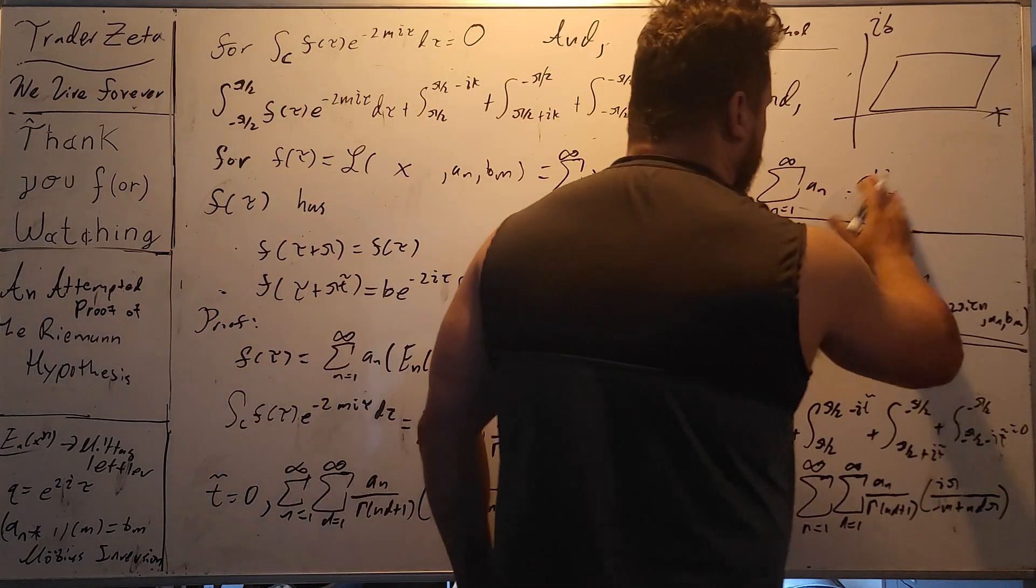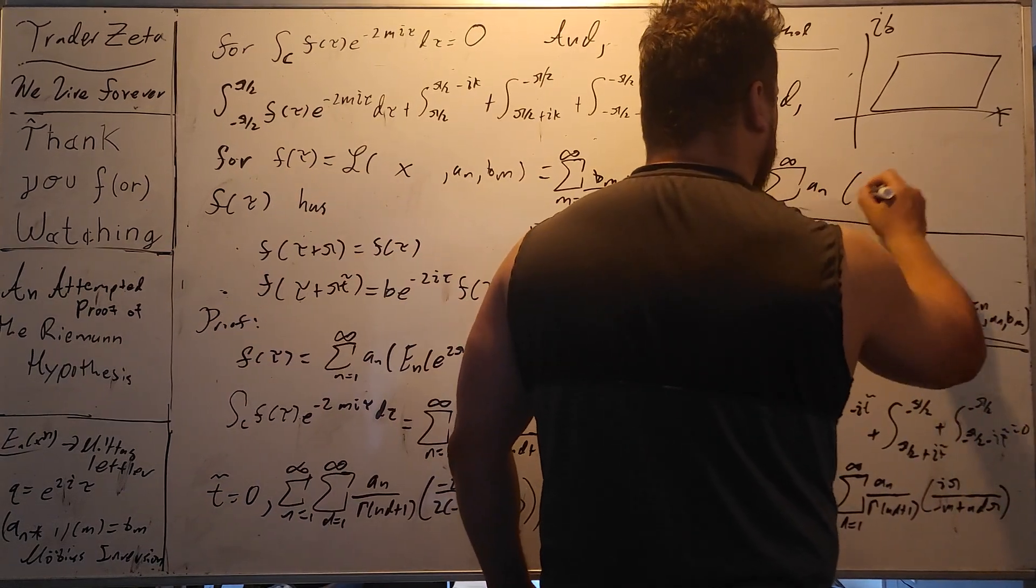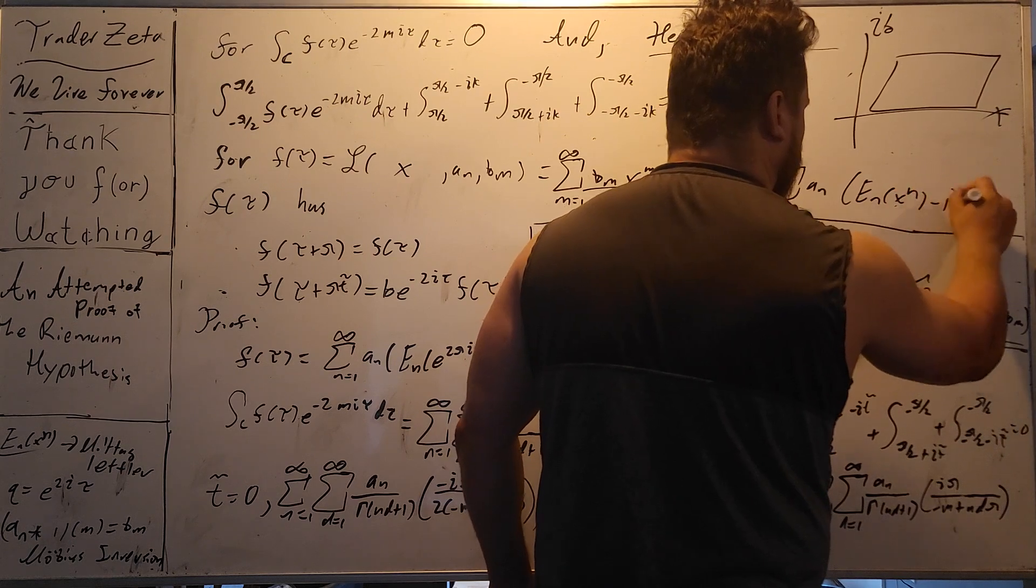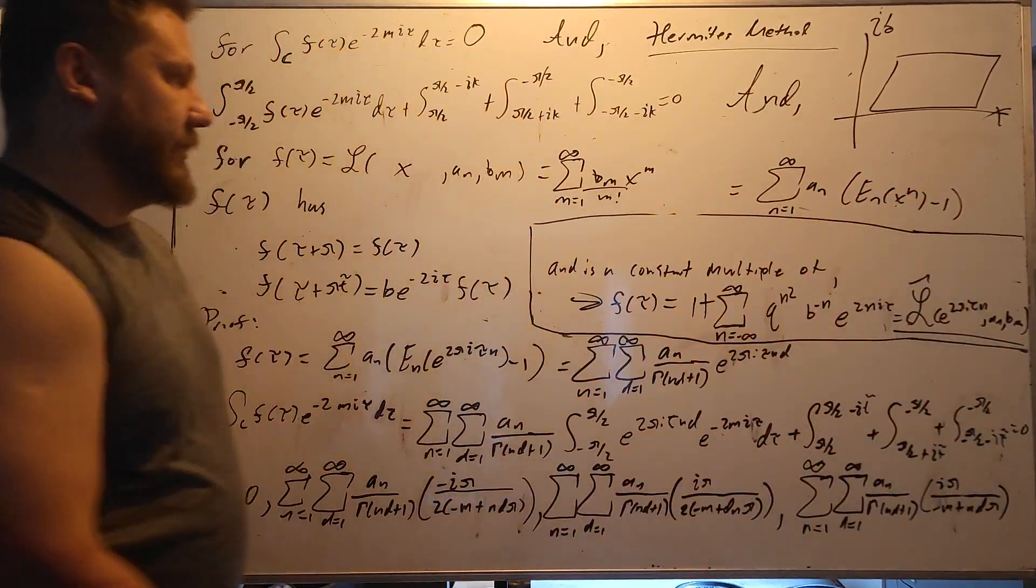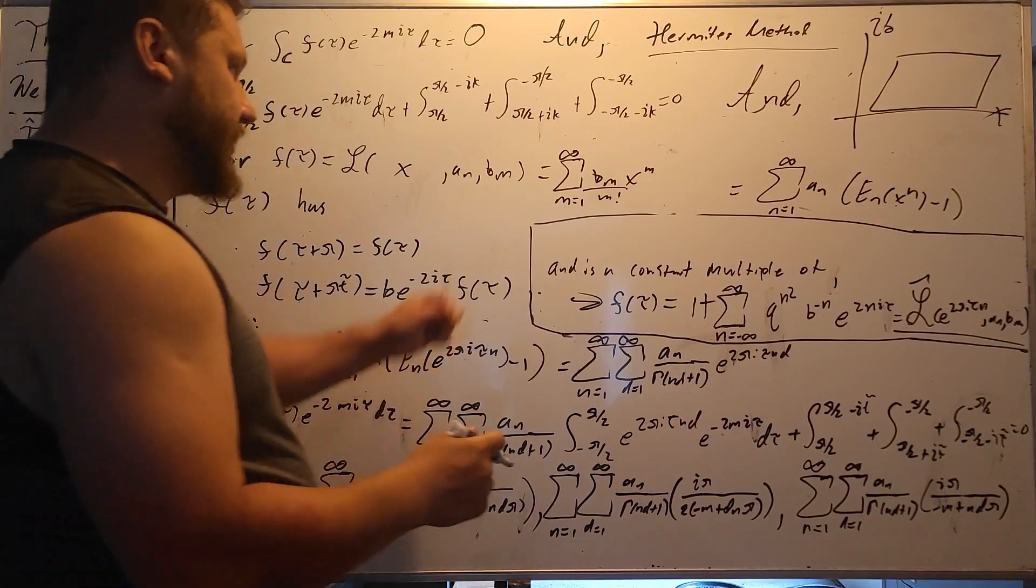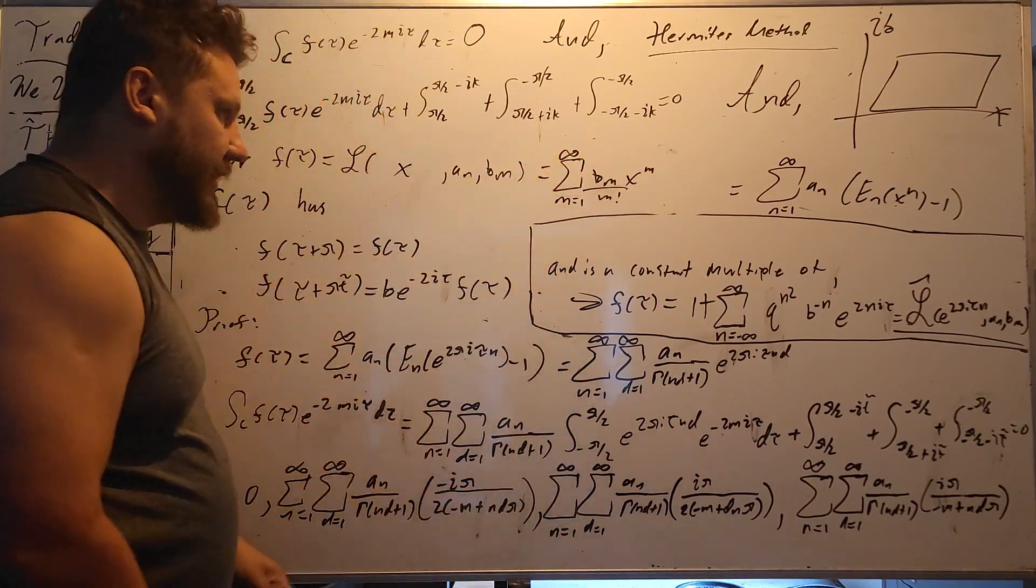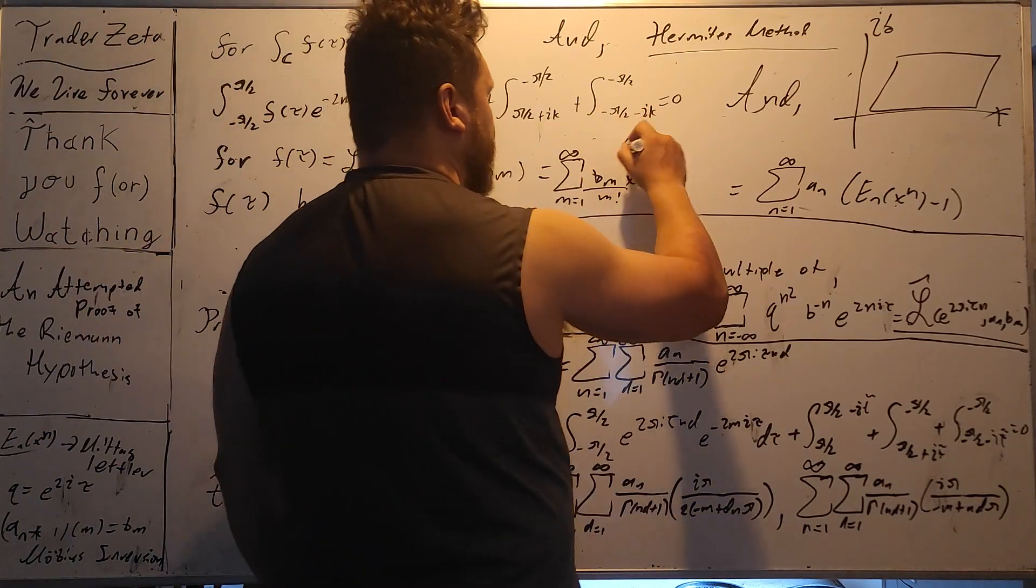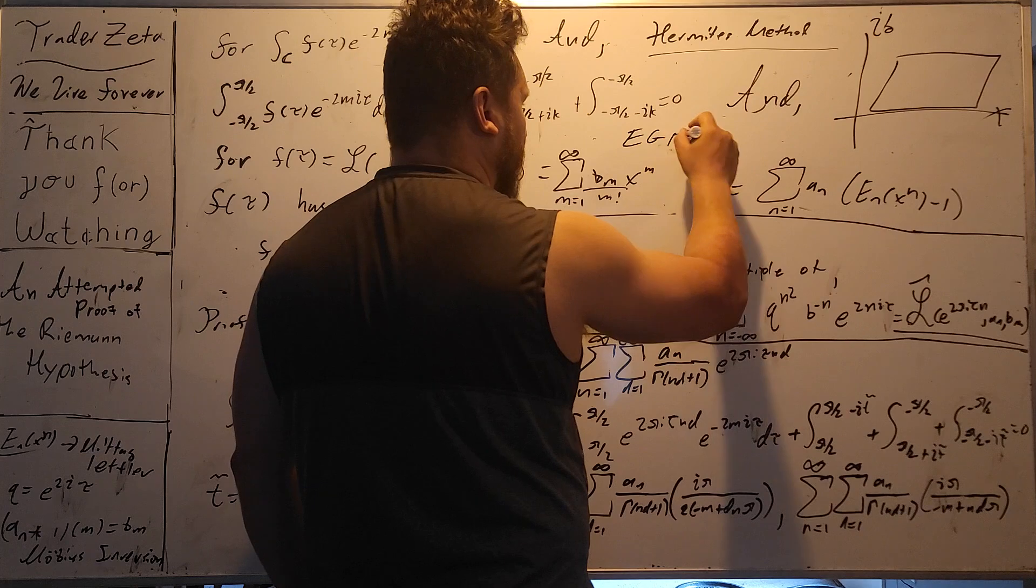Well, this becomes, when you do the transformation, it becomes e n x to the n minus 1. This is Mittag-Leffler function. Now, it's very interesting way to do this. There's multiple ways to get the EGF. Borel summation, you can use inverse Laplace transform. I will just say EGF.